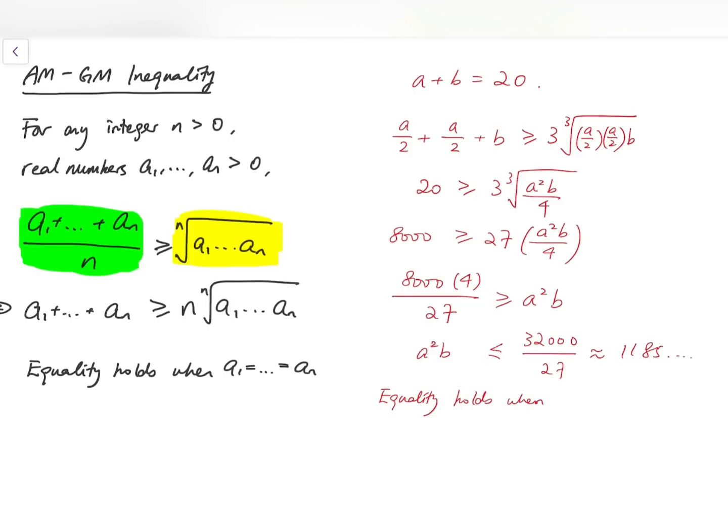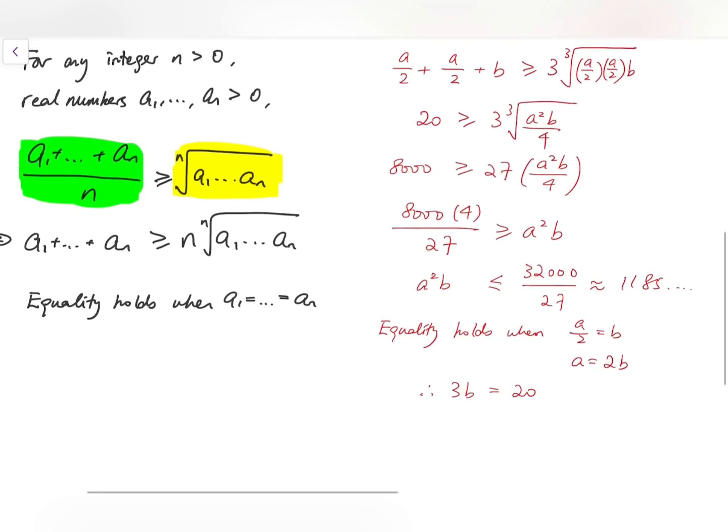From this inequality, we know that we can attain the maximum when a over 2 and b are equal, which means a equals 2b. And since the sum is 20, a plus b is just 3b, and equals 20, we know that b should be 20 over 3, which is somewhere between 6 and 7.